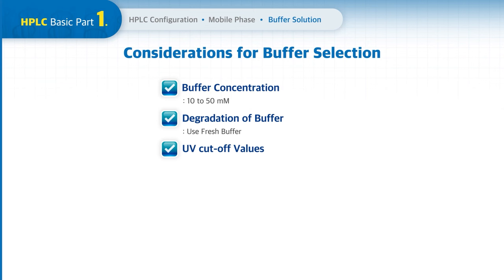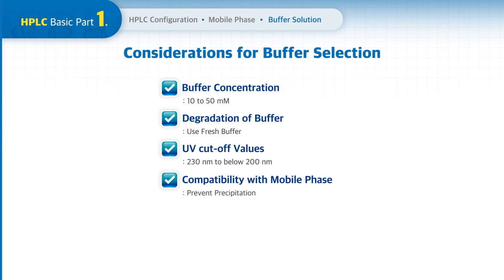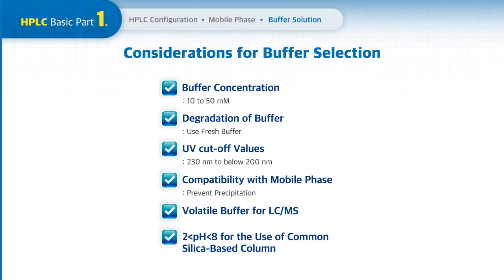UV cutoff values — buffers should be transparent enough at the wavelength of detection; the UV cutoff of commonly used buffers ranges from about 230 to below 200 nanometers. Buffers should also be compatible with the mobile phase to prevent precipitation in the system — a test tube test should be conducted to determine buffer precipitation. For use with LC-MS, volatile buffers should be selected. For silica-based columns, the pH range should be adjusted within pH 2 to pH 8.